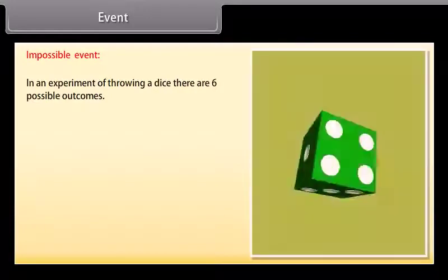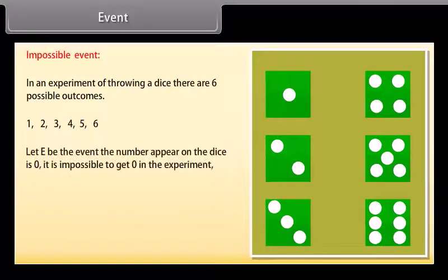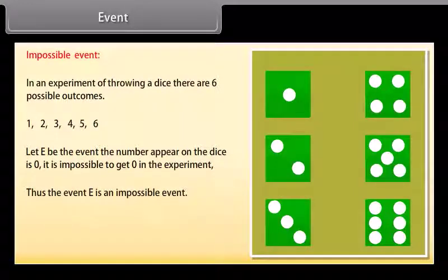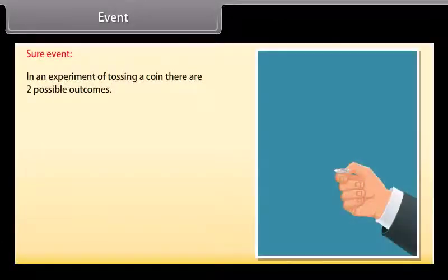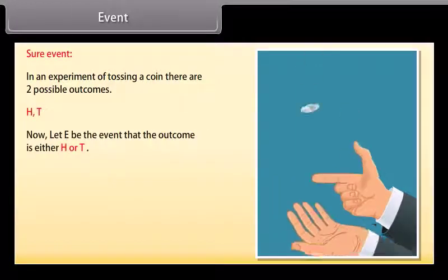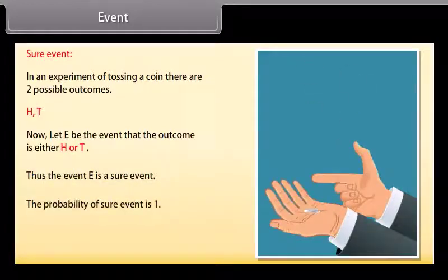Impossible event: In an experiment of throwing a dice, there are 6 possible outcomes: 1, 2, 3, 4, 5, 6. Let E be the event that the number appearing on the dice is 0. It is impossible to get 0 in the experiment. Thus, event E is an impossible event. The probability of an impossible event is 0. Sure event: In an experiment of tossing a coin, there are 2 possible outcomes: H, T. Let E be the event that the outcome is either H or T. Thus, event E is a sure event. The probability of a sure event is 1.